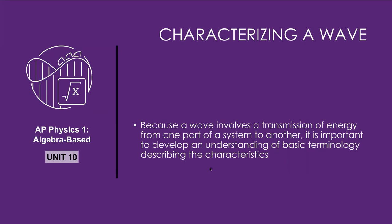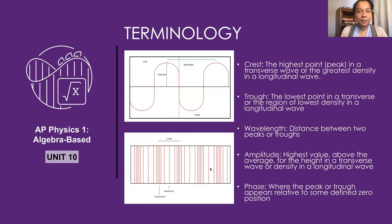Because a wave involves transmission of energy from one part of a system to another, it's important to understand some basic terminology in order to describe and manipulate waves and solve problems. Looking at a transverse wave, you'll note it looks just like a sine or cosine function. The wave is characterized by having a peak or crest and a low point or trough. We refer to the total displacement from some average zero value as the amplitude, and the distance from peak to peak or trough to trough is known as the wavelength.